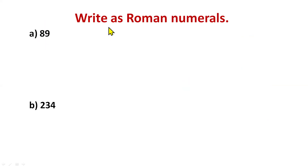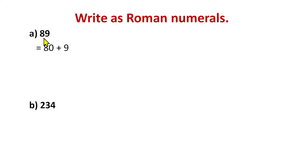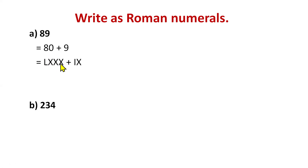Now we have a practice question: write 89 in Roman numerals. We are not using a sequential order this time — you have to find the exact Roman numeral for 89. For that, we decompose it: 89 = 80 + 9. 80 takes help from 50: 50+10+10+10 = LXXX, and 9 is IX. So 89 is LXXXIX.